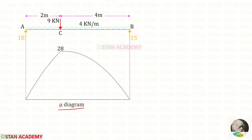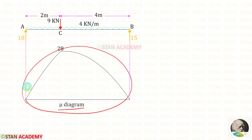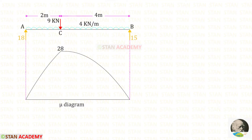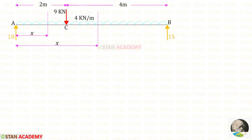Now we have to find the area of this diagram. Since it is a parabolic shape it is difficult to find the area directly, so we have to use integration. To perform the integration we have to make sections in this beam. In this beam there are two different parts: AC and CB, so we have to make two sections — one in AC and one in CB. Both sections are taken at a distance of x from point A.